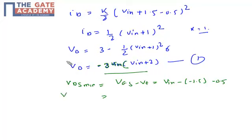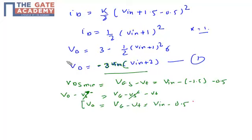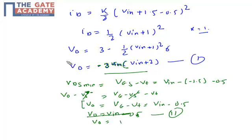I can also write VDS as V0 minus VS-, where VS- is the negative supply. So VDS = V0 - VS-. And VGS - VT = VG - VS- minus VT; the VS- terms cancel. So my V0 = VG - VT, where VG is VIN and VT is 0.5 (threshold voltage). Therefore V0 = VIN - 0.5. This is Equation 2.